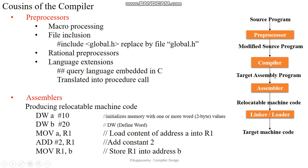Without these three tools, the compiler itself cannot process the conversion from one programming language into another. The preprocessors are needed to include files such as header files and other C programming language files. Then macro processing is used to define constants in the header file section. Rational preprocessors are needed to add advanced capabilities into the programming language, and language extensions add additional capabilities into our program.